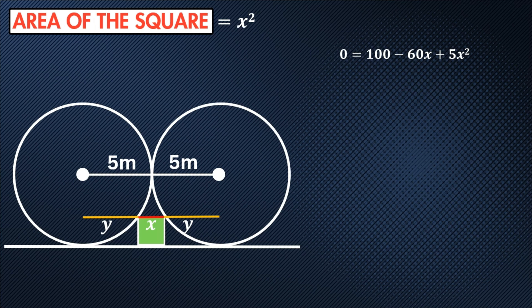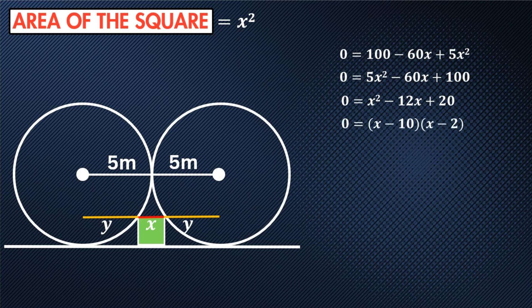Let's rewrite this quadratic: zero equals 5x squared minus 60x plus 100. We can divide all terms by five. Factorizing the quadratic by finding factors of 20 that multiply to 20 and add to negative 12 — that is negative 10 and negative 2. Making both brackets equal zero means x would be 10 or x would be 2. Looking at the example, x can't be 10, so we reject that. Therefore x is 2.